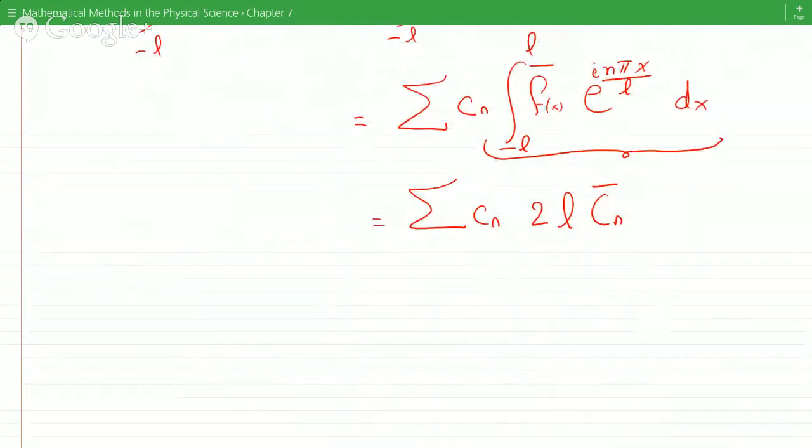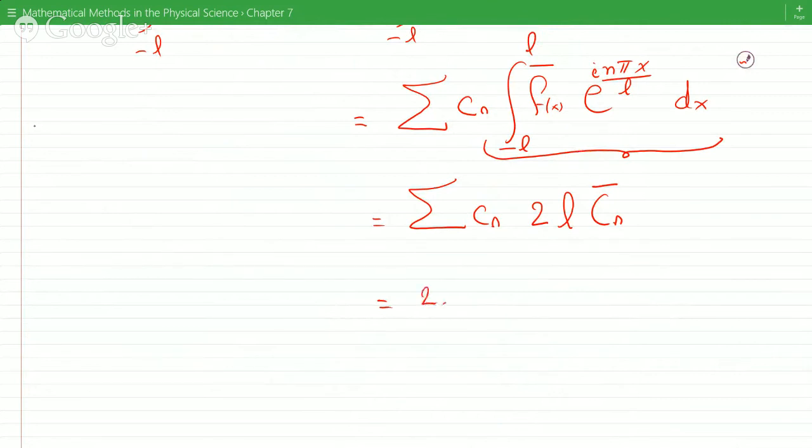And so now this just becomes 2L summation C_n times C_n complex conjugate minus infinity to plus infinity, so therefore we get...